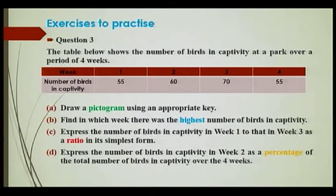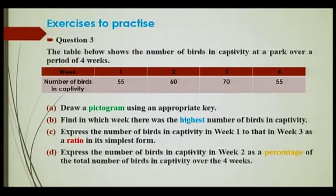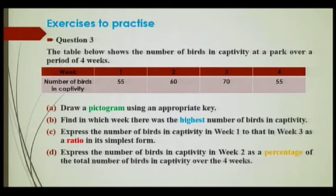The last question: The table below shows the number of birds in captivity at a park over a period of four weeks. You need to construct your pictogram, but here the key has not been given — you are supposed to use an appropriate key. Once you have drawn your pictogram, answer the following questions: Find in which week there was the highest number of birds in captivity. Express the number of birds in captivity in Week 1 to that in Week 3 as a ratio in its simplest form. Express the number of birds in captivity in Week 2 as a percentage of the total number of birds in captivity over the four weeks.